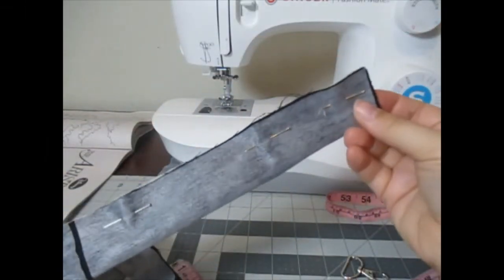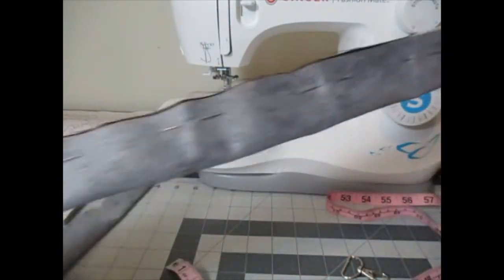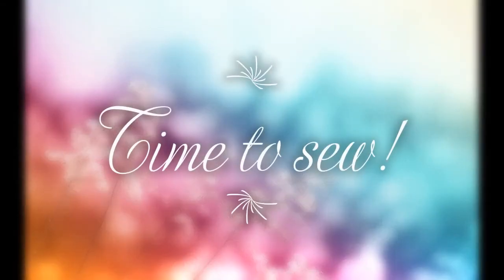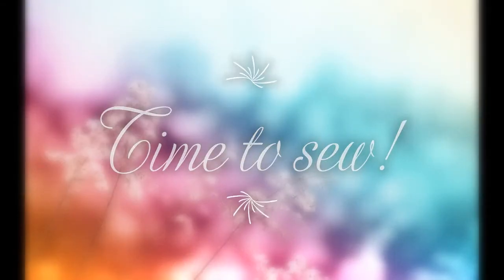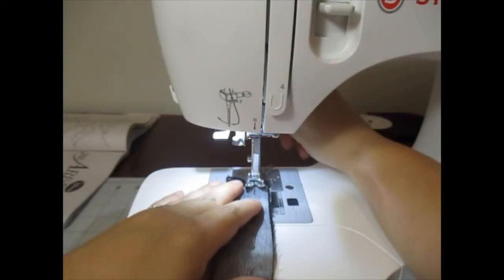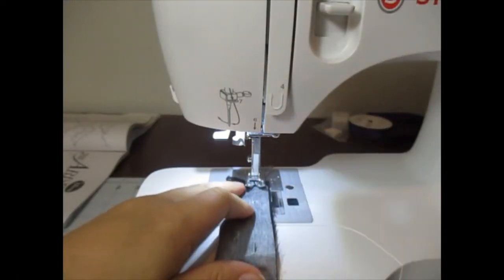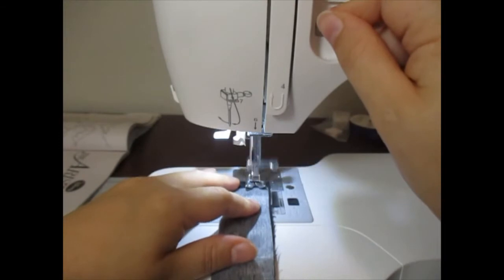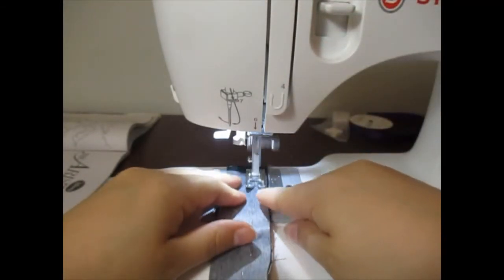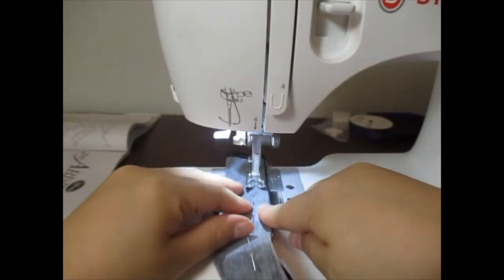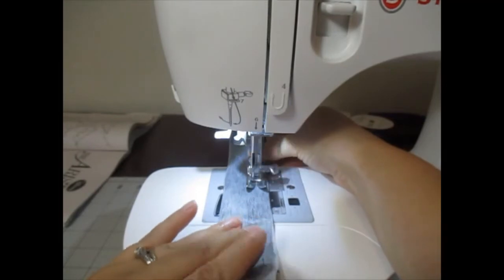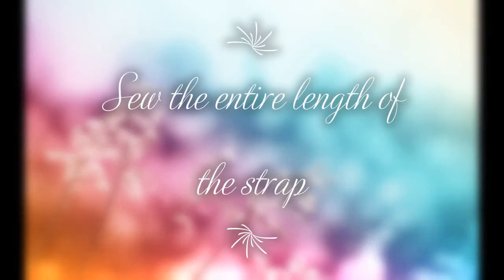All right, now that you've got the whole thing pinned, it is time to start sewing. Put your presser foot down, remove your first pin, start sewing. Make sure you backstitch a little and just keep going. Stop to remove pins.